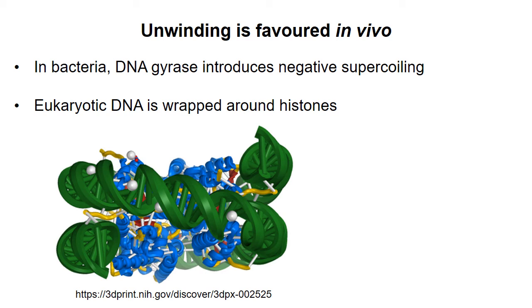In eukaryotes, DNA is wrapped around histones in nucleosome core particles in the manner shown in this figure. Take a moment and figure out what kind of supercoiling the DNA is doing here as it wraps around the histones. Maybe pause the video and think about it.